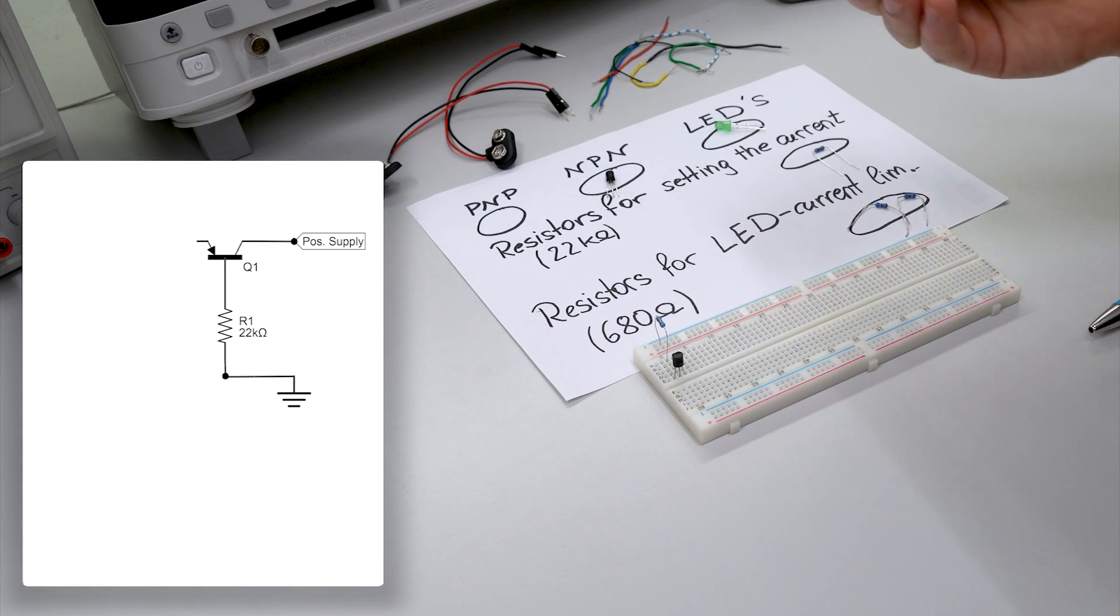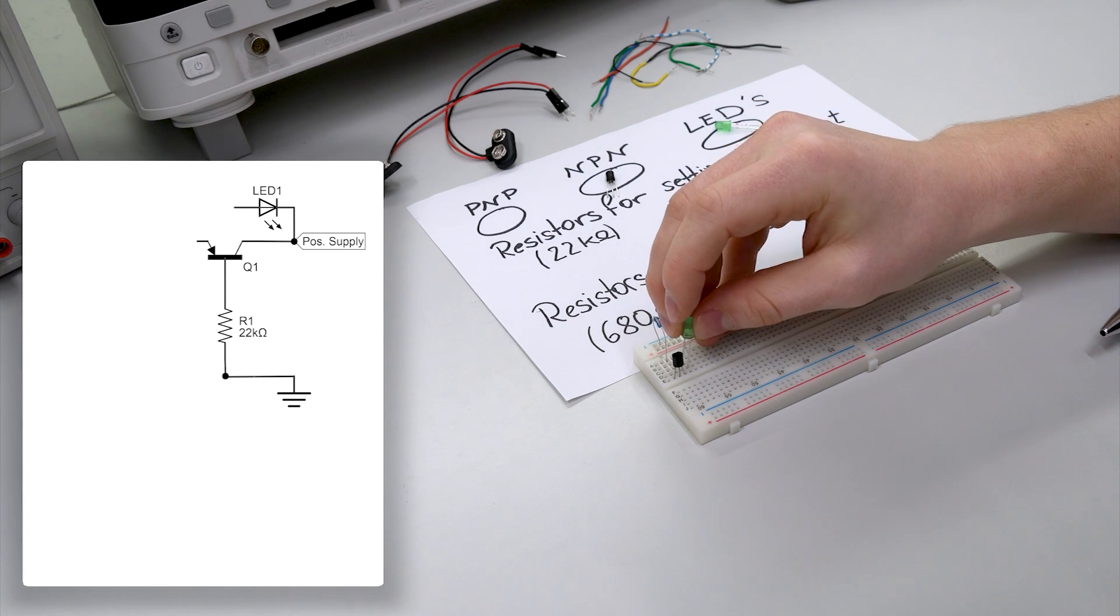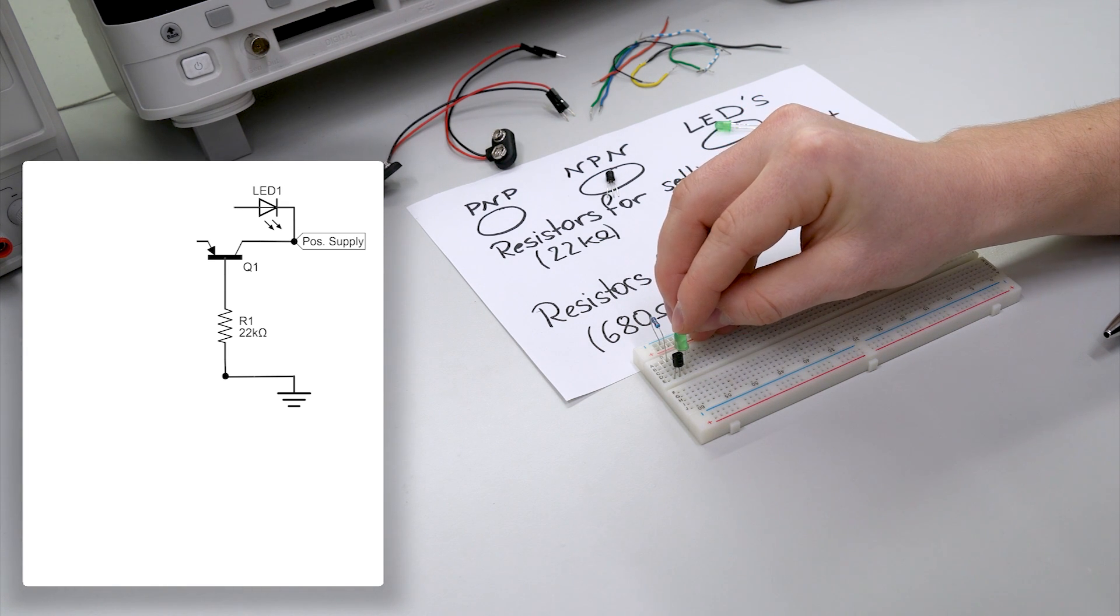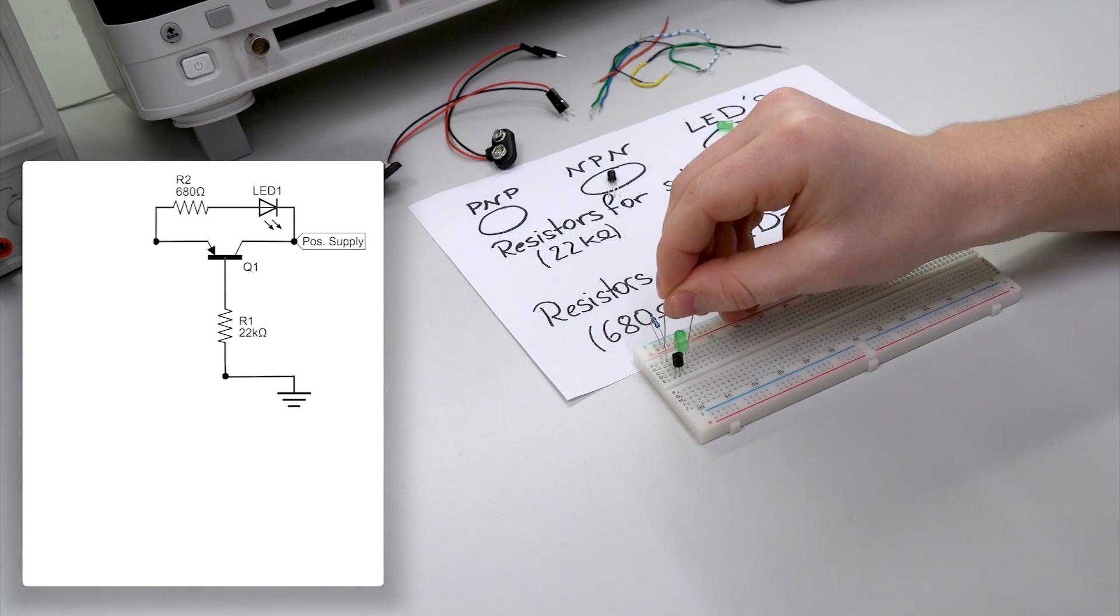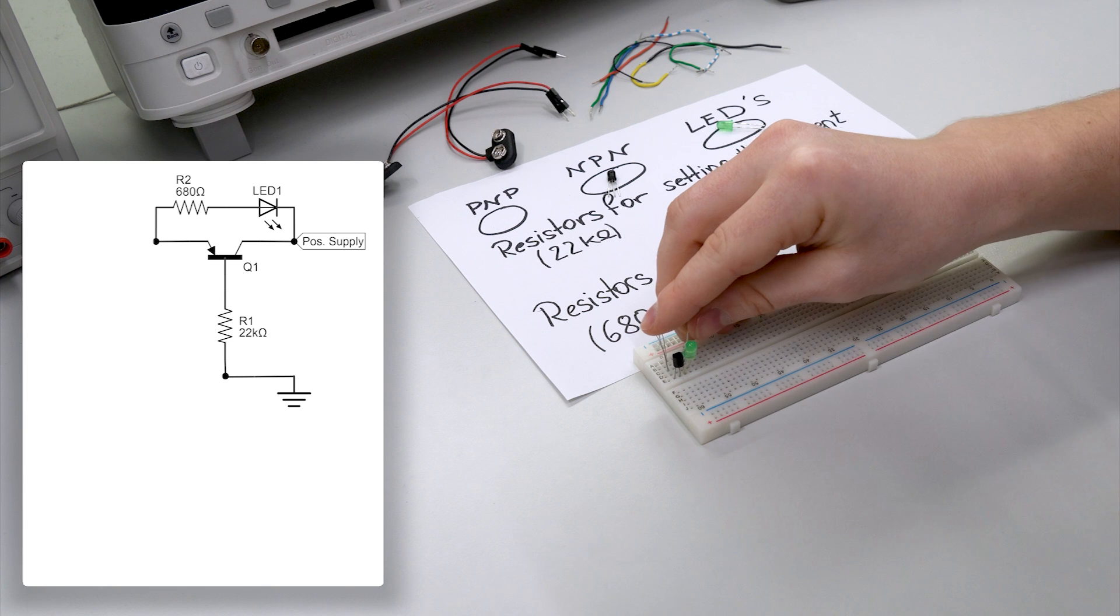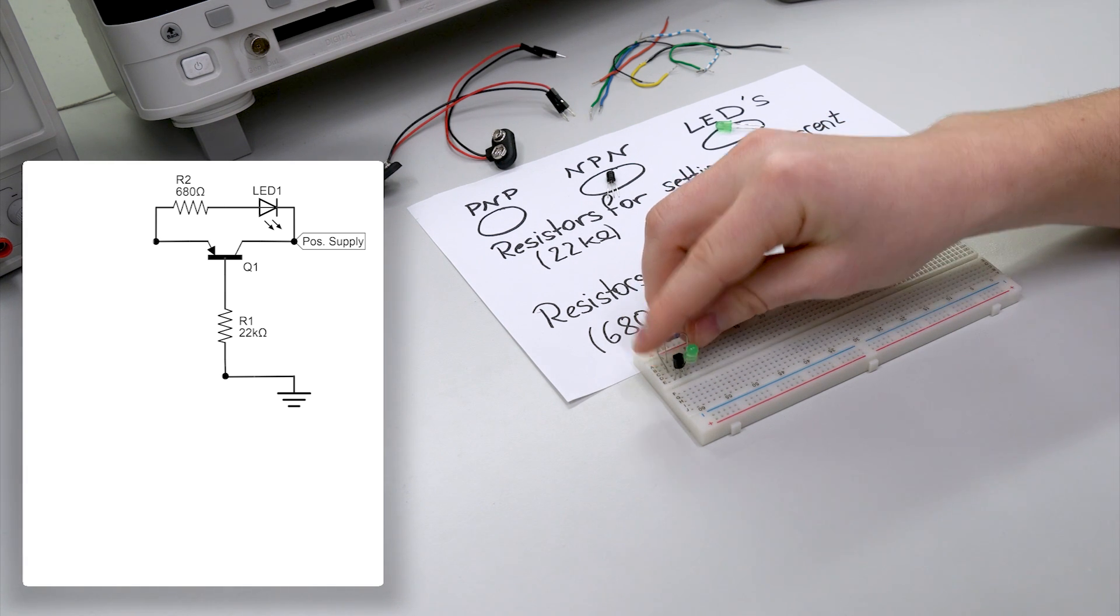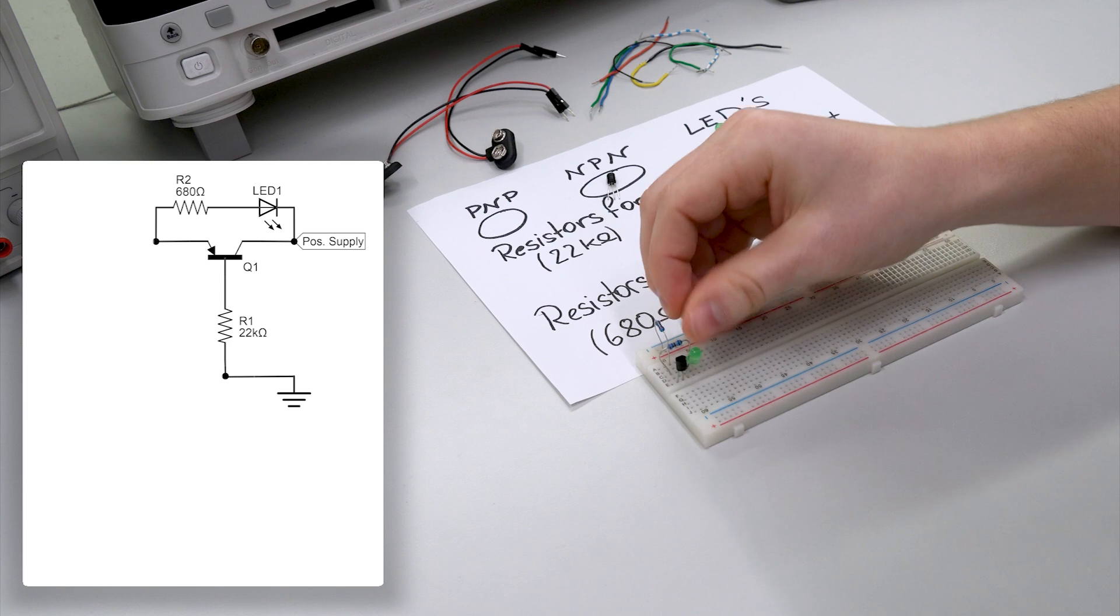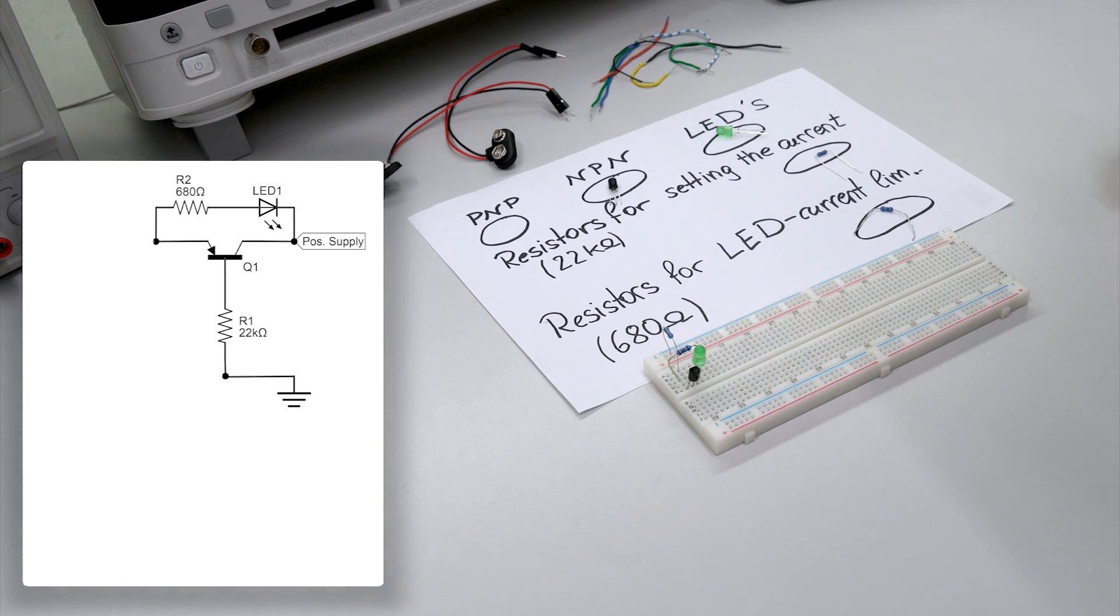Then we need the LED. The cathode should be at the collector. And with such a current limiting resistor we connect the anode of the LED with the emitter of the transistor. That's basically it for the positive supply.